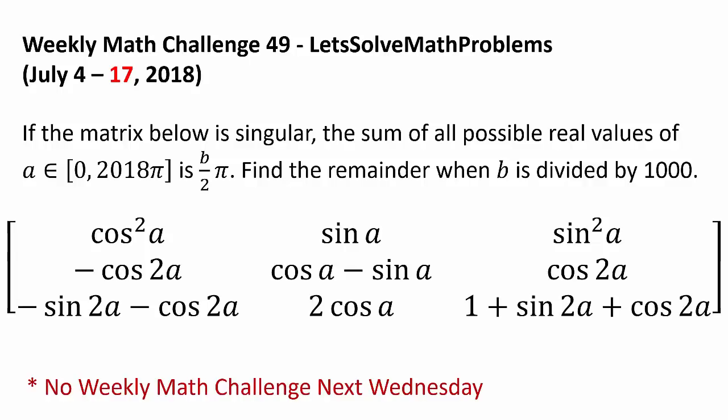So the question is: if the matrix below is singular, and the sum of all possible values of A belonging to the closed interval from 0 to 2018π is b over 2π, find the remainder when b is divided by 1000. The matrix from top row to bottom row is as follows — top row: cos²(A), sin(A), sin²(A); second row: −cos(2A), cos(A) − sin(A), cos(2A); third row: −sin(2A) − cos(2A), 2cos(A), 1 + sin(2A) + cos(2A).